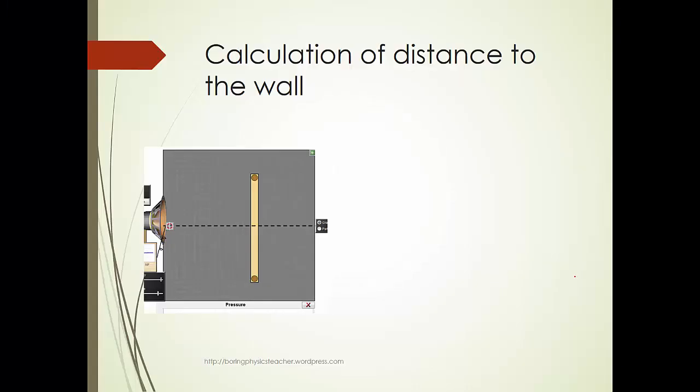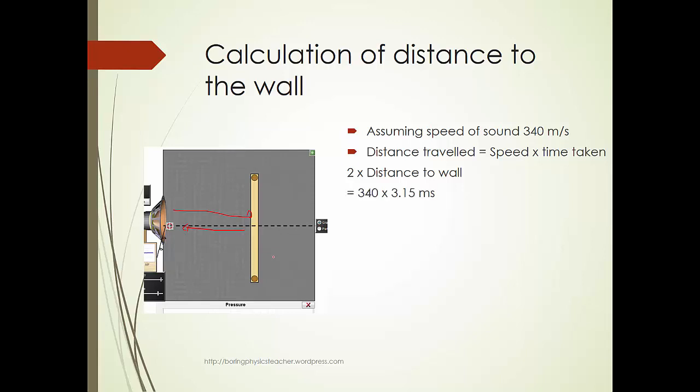Okay, so this is the setup that we saw just now. And assuming the speed of sound is 340 meters per second, and the general equation is distance traveled equals speed times time taken. So, 2 times distance of the wall. Okay, because the distance traveled is actually go there and come back. Okay, so it's 2 times distance of the wall, equals the speed times the time taken, which was 3.15 milliseconds.